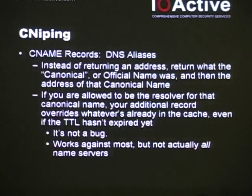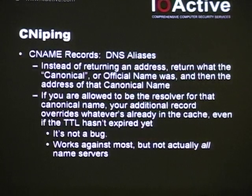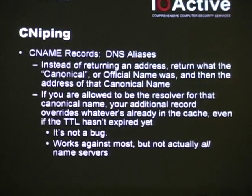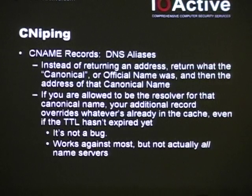It turns out overriding a TTL when you actually own the record at play is trivial. It's by design. Here's how you do it. When you look something up in DNS, you do not necessarily get back an address directly — you can get something called a CNAME. That says, 'I know you looked up bar, but bar is just an alias — that's actually 2.bar.' And here's 2.bar's new address. It turns out this actually overrides whatever was in the cache regardless of TTLs. Works like everywhere.